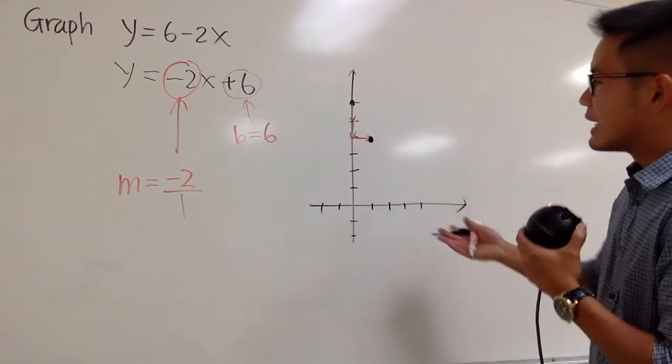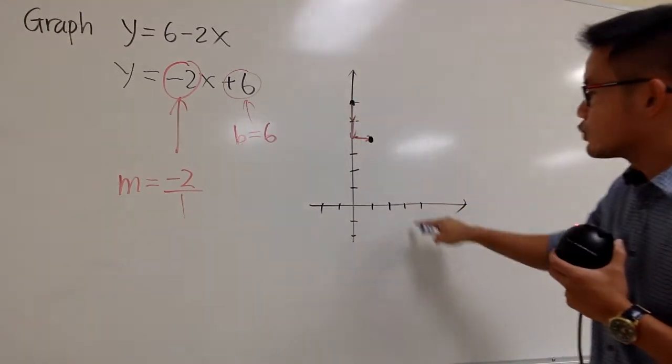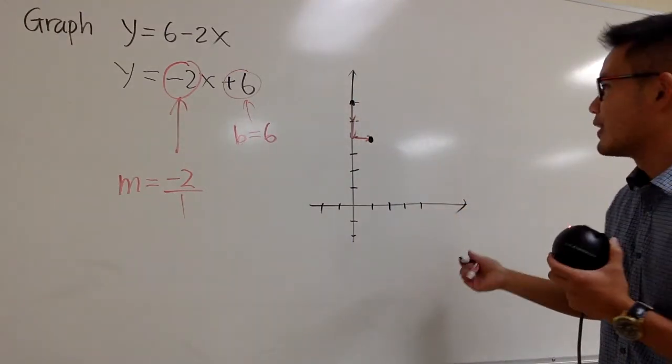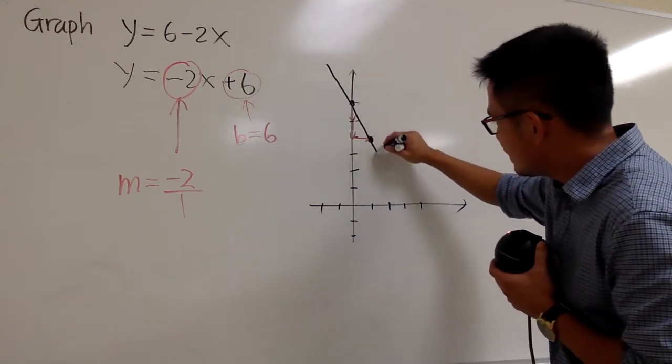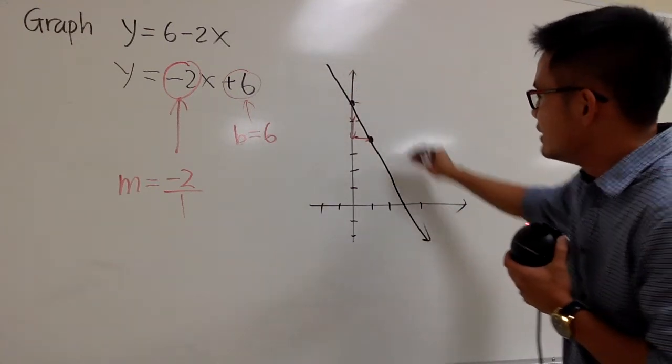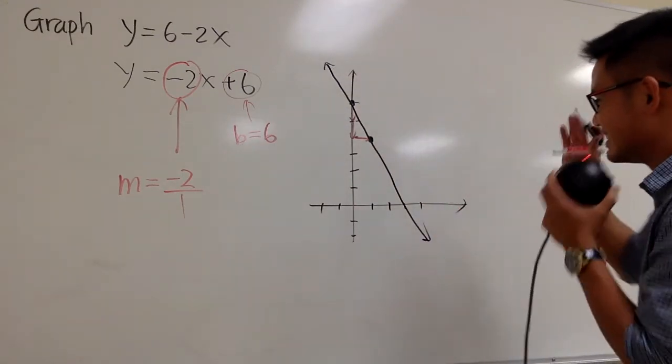And you can keep going, but this is actually enough. You can now just connect the dots right here with a straight line. And that will be it. So let me do that. Hopefully my line is good for you guys. It's good enough. Like this. And this is meant to be a straight line. I'm not using a ruler, but you should. But anyway, this is it.